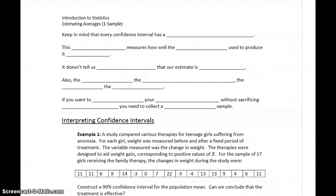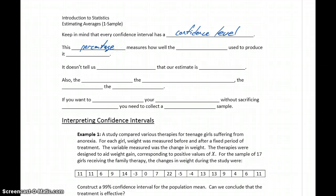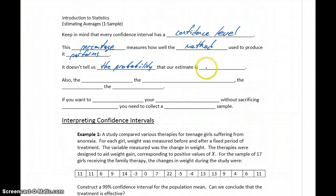When we're constructing estimates, there are some different ideas to keep in mind related to the theory of confidence intervals. Every confidence interval has a confidence level — whether we choose 90%, 95%, 99%, or 97.6% — and this measures how well the method used to produce it performs. We want to be clear on what that confidence level actually does and doesn't tell us. It doesn't tell us the probability that our estimate is correct, or successful in capturing the true population parameter.